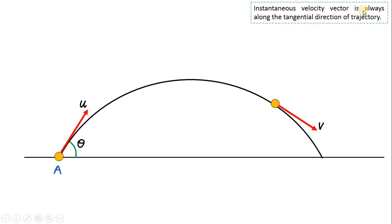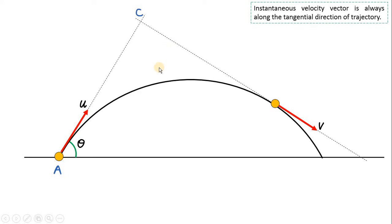The instantaneous velocity vector is always along the tangential direction of the trajectory. This trajectory or path is a parabola, and at any instant of time the velocity vector will be along the tangential direction. The dotted lines show the tangents to the curve at each instant, so the velocity vector is along the tangent. We want to find the time t after which the final velocity vector becomes perpendicular to the initial velocity vector, i.e., the angle between them becomes 90 degrees.